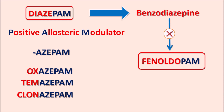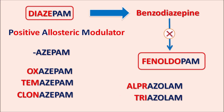Similarly, within this category we have another type of drug with a different suffix, such as alprazolam, triazolam, and midazolam. These three drugs have the suffix '-azolam' but still belong to the benzodiazepine category. So benzodiazepines can be identified by two suffixes: either '-azepam' or '-azolam'.